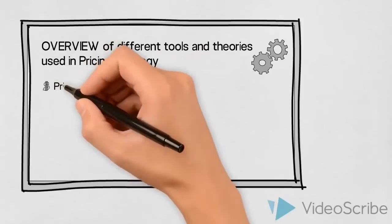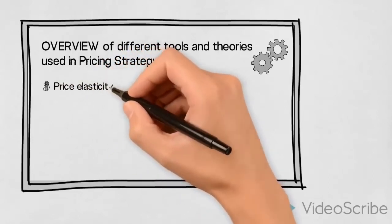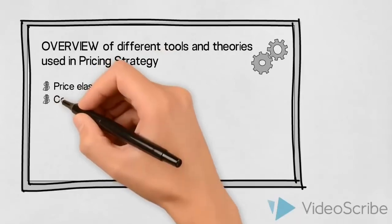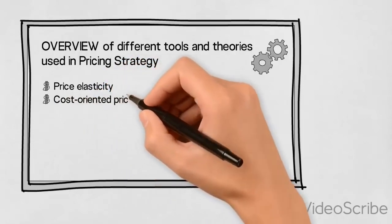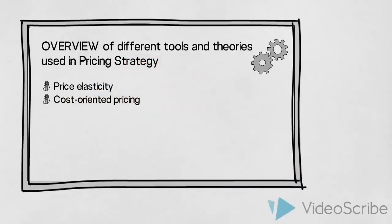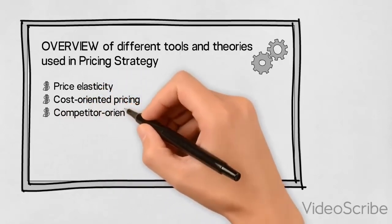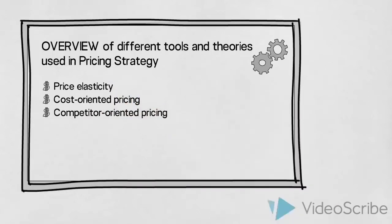Price elasticity can be looked at — to what extent, if at all, will a price change impact the demand for our product or service? Secondly, cost-oriented pricing can be used; this is where we base our price on the different costs involved in producing and selling our product. We can also use competitor-oriented pricing, where we base our price on the knowledge we have about our competitors' prices and activities.